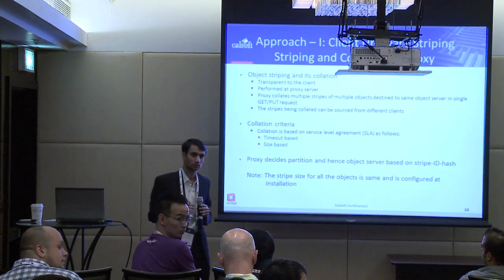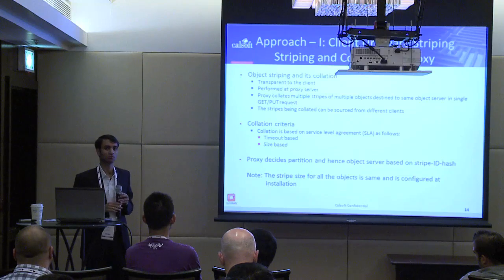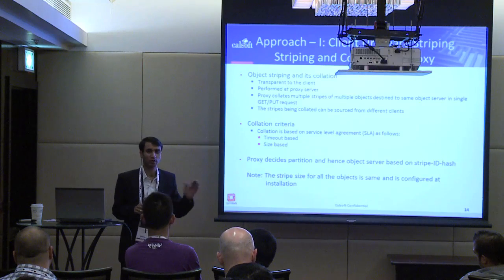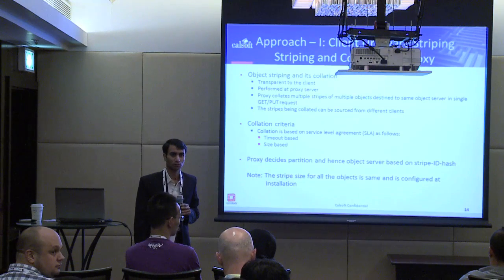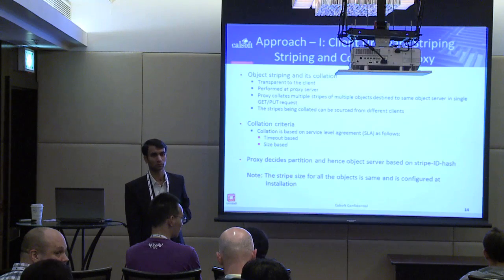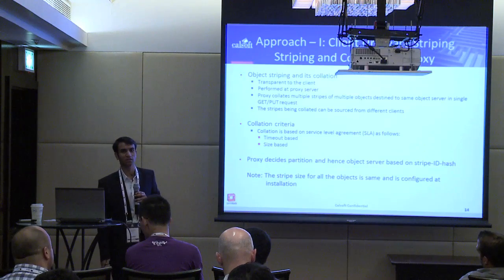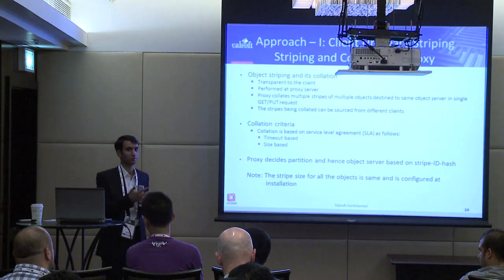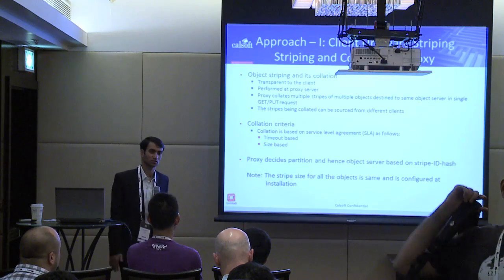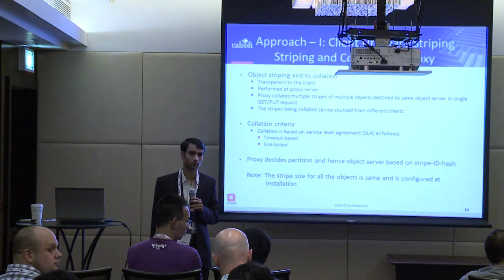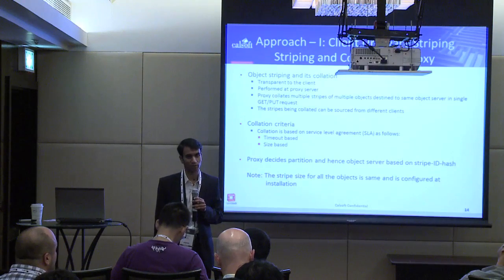An audience member asks whether both approaches can be enabled simultaneously, perhaps via a flag on get or put operations to tell it whether to assemble or how to handle the segment. The response: certainly both can be supported. Based on the client version, the proxy can decide whether to be involved in striping or not. If the client is not available, a callback mechanism could allow fallback to approach one.